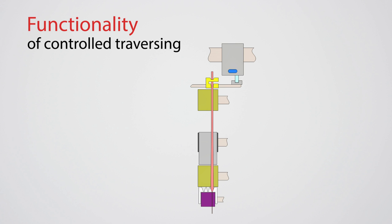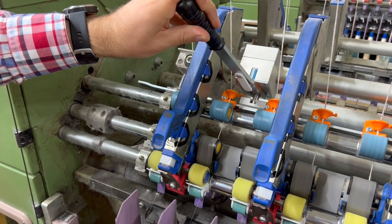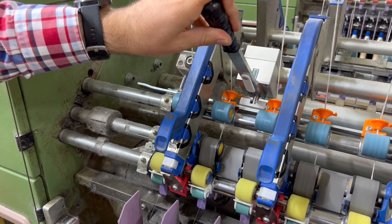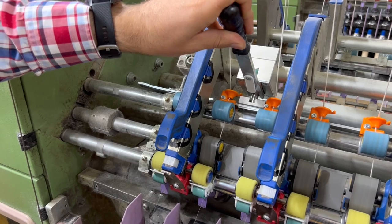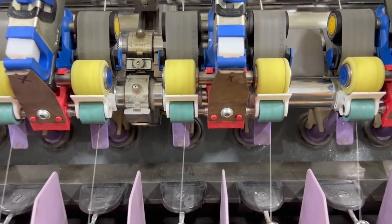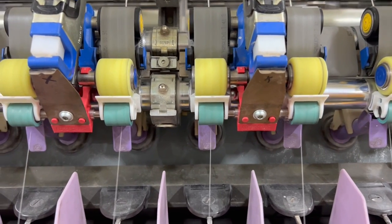We start with the blue color on the settings box and the right roving path. Then we change the settings box to green and the roving will automatically traverse to the middle channel. Here we change the position on the settings box. This makes the roving traverse from the right to the middle channel.